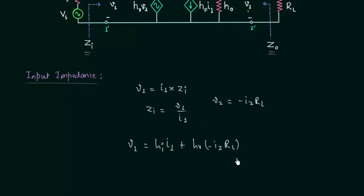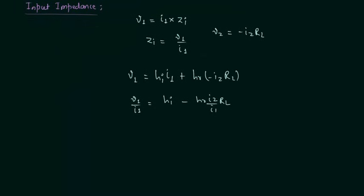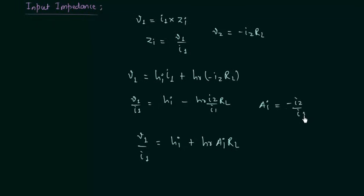Now I will divide both sides by I1. Then we have V1/I1 on the left hand side, and on the right hand side we have Hi minus Hr·(I2/I1)·RL. I2 divided by I1 is equal to minus of Ai. So we have V1/I1 equal to Hi plus Hr·Ai·RL, where current gain Ai is equal to minus of I2 divided by I1.